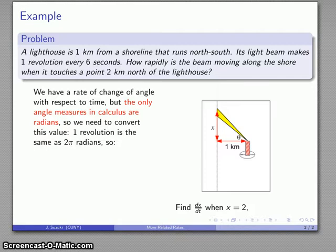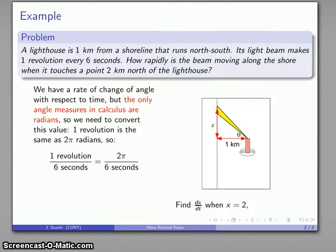Fortunately it's easy to convert back and forth between the different types of measurements. Remember that once around a circle, one revolution is the same as 2π radians. So this rate of change, one revolution every six seconds, is the same as 2π radians every six seconds. So this rate of change that we're given is really 2π over 6. And so I have the given information, dθ/dt is 2π over 6.